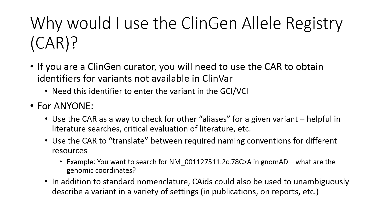This number is particularly important if your variant is not available in ClinVar. However, you may find the CAR useful even if you're not currently involved in ClinGen curation activities. You can use it as a way to check for aliases for variants, which can help you build more effective literature searches. You can use it to figure out the format necessary to search for variants across different resources — for example, to search in gnomAD you need genomic coordinates, and if you only have transcript-based nomenclature, the CAR may be able to help. You can also opt to include CA IDs in publications or laboratory reports to help other downstream users avoid the problem of an ambiguously described variant.